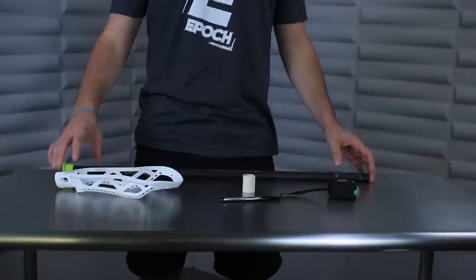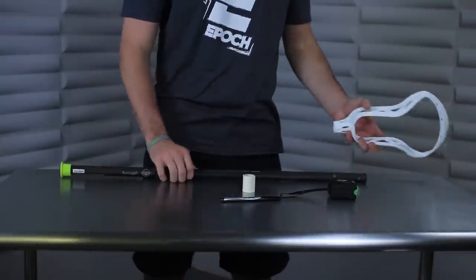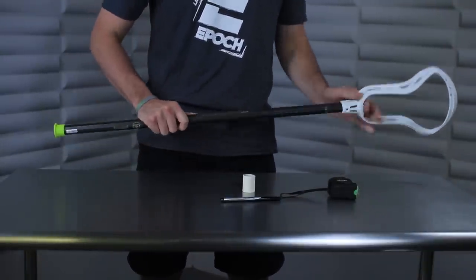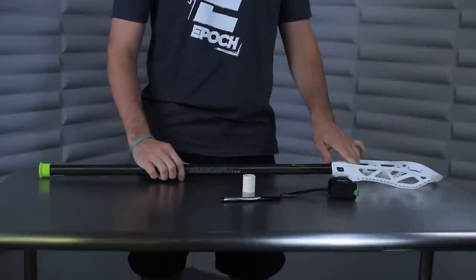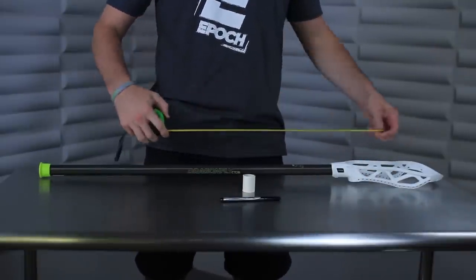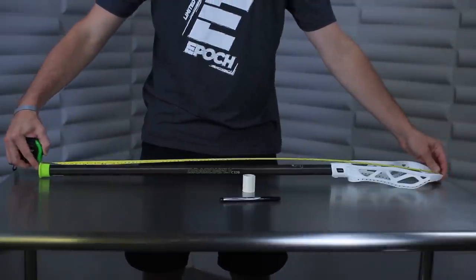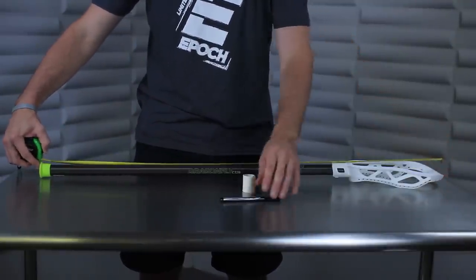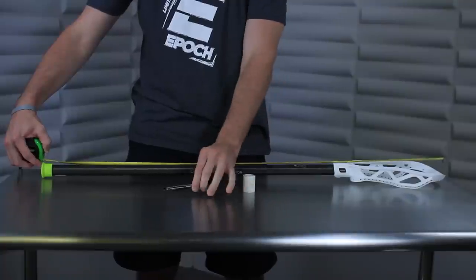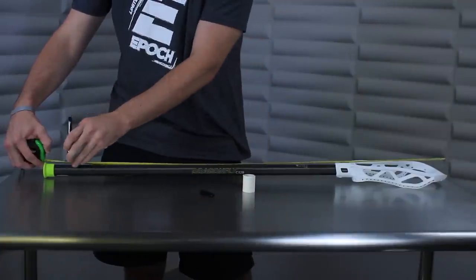The first thing you'll need to do is place the head firmly on the shaft and ensure it's completely on. Next, take the tape measure and mark the distance from the top of the head to the distance that you'd like to cut your shaft down to. Remember, there are minimum required lengths for your stick based off what position you play.